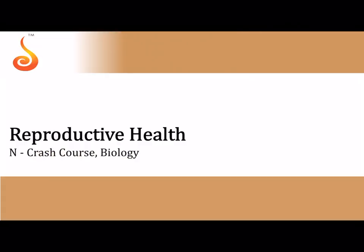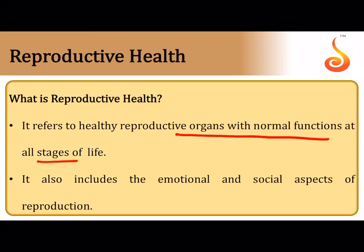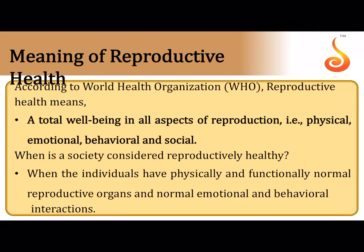Moving on to the synopsis of the next chapter — reproductive health. Reproductive health means all reproductive organs are functioning normally at all stages of life. It involves not just the physical and physiological aspects but also social, emotional, and behavioral aspects. The World Health Organization defines reproductive health as a total well-being in all aspects of reproduction — physical, emotional, behavioral, and social.